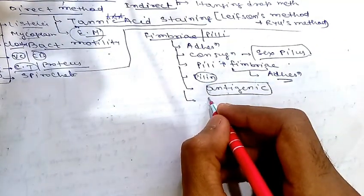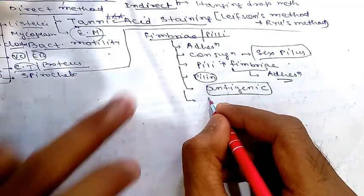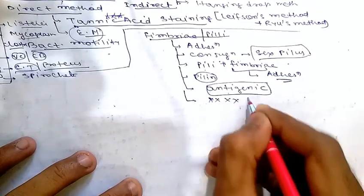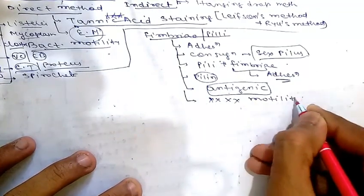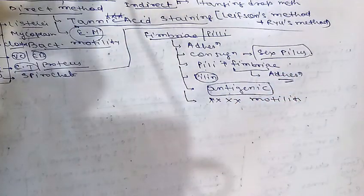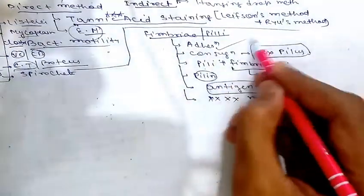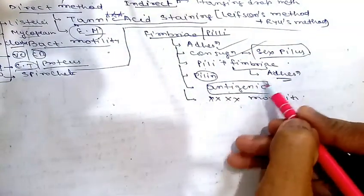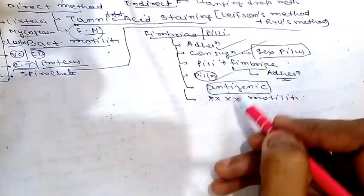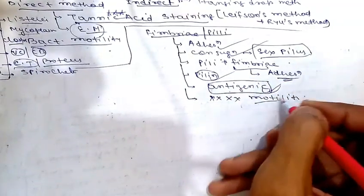Pili or fimbriae are not related to motility and can be found in both motile and non-motile bacteria. The important functions of fimbriae are: adhesion, conjugation (via sex pili), and they are antigenic in nature — but no relation with motility.